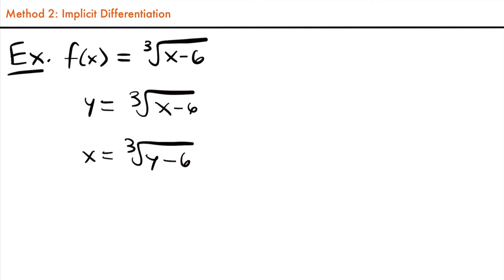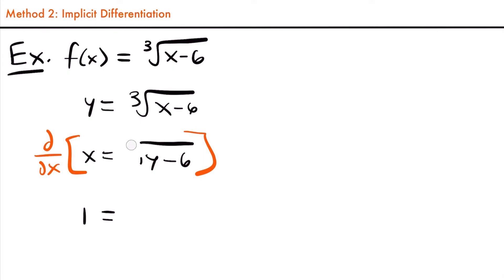Now we're going to differentiate this function with respect to x. So we'll take d/dx of both sides of this equation. That requires implicit differentiation because we're taking a derivative of y with respect to x. The derivative of x with respect to x is just one. That equals the derivative with respect to x of the cubed root of y minus six. Remember the cubed root can be rewritten as the power of one-third, and we'll need to use the chain rule, multiplying by dy/dx at the end because we're taking a derivative of y with respect to x.